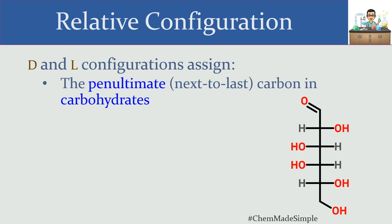We have a first carbon, second, third, fourth, fifth, and sixth. When we number our carbon chains, we number as close as possible to the most oxidized carbon — so that's carbon number one through six. Our next-to-last one is going to be that fifth carbon, and we're going to base our D or L configuration on the substituents and how they're oriented around only that carbon, even though there are multiple chiral centers on this molecule — specifically four.